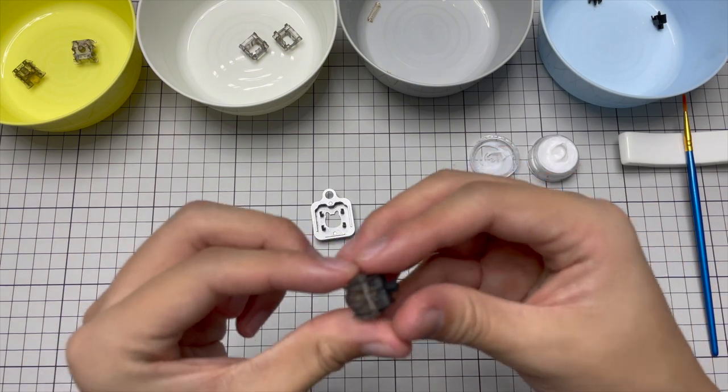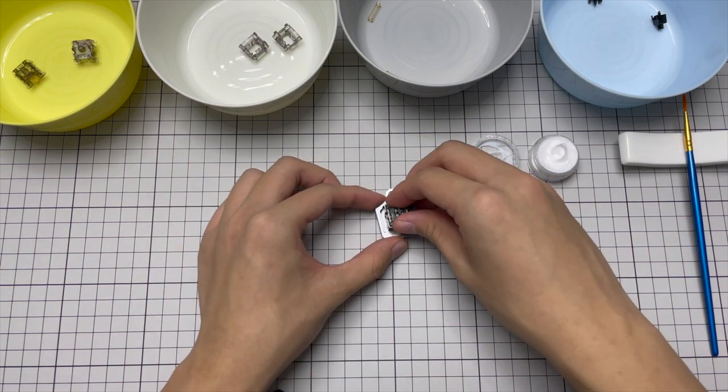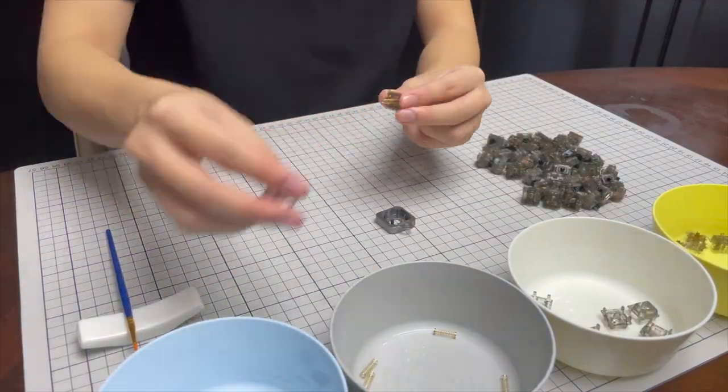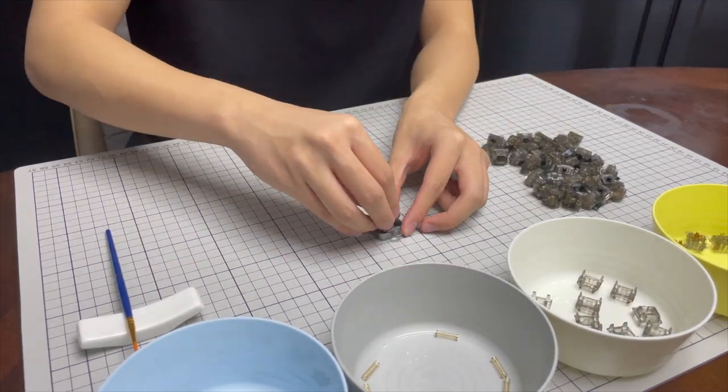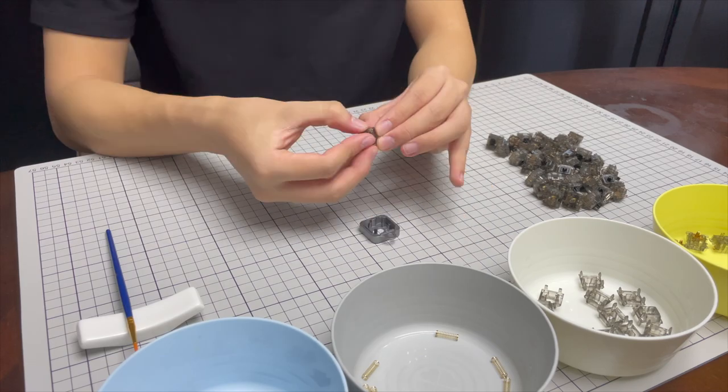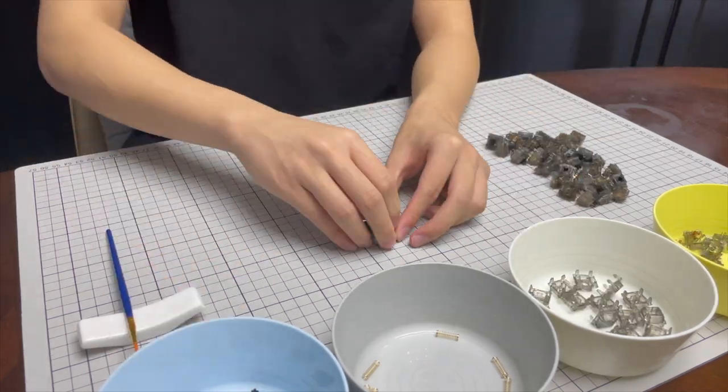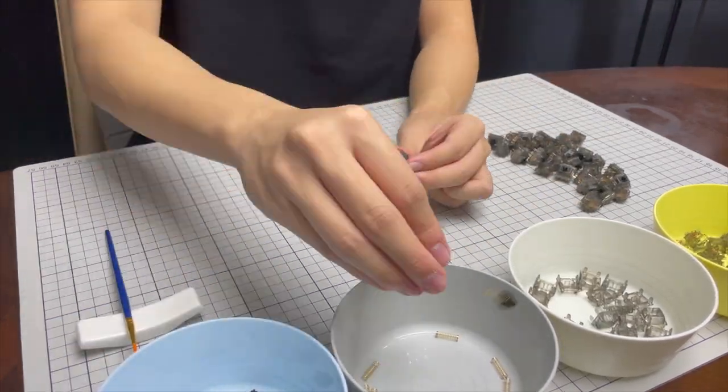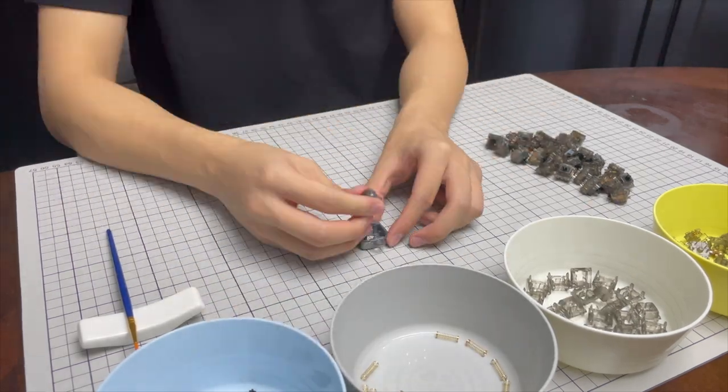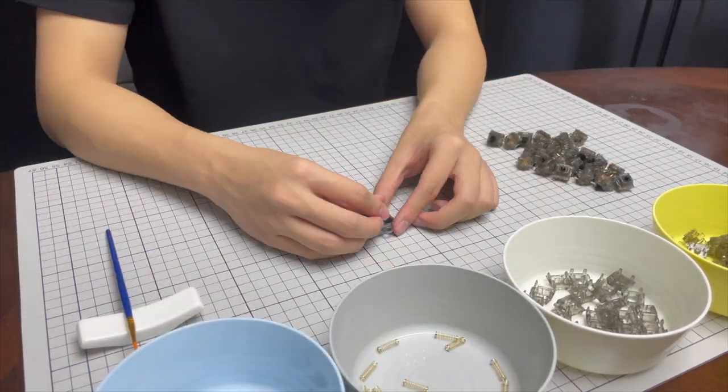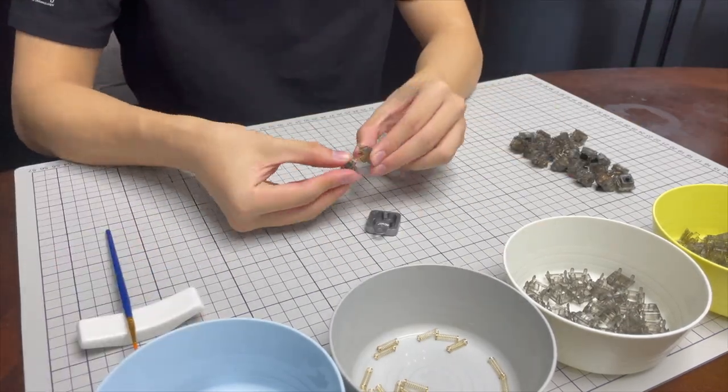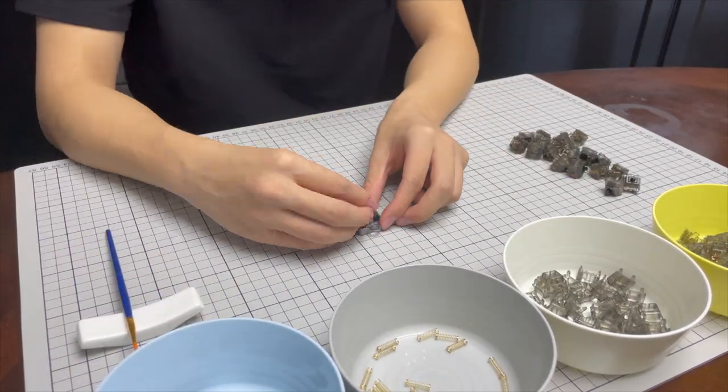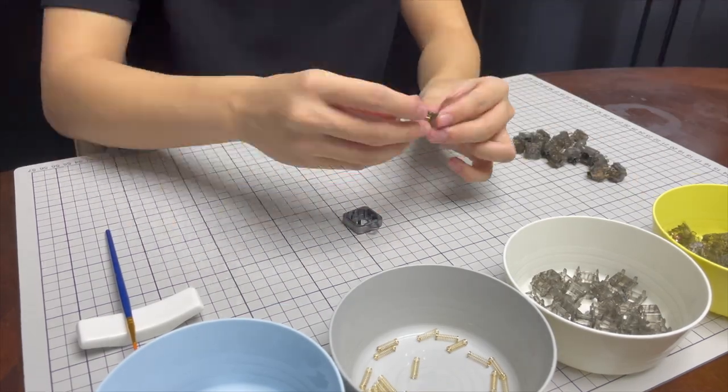Although these Durock L7 switches came pre-lubed in the factory, it still doesn't beat manual lubing, so I went ahead and lubed them myself. In order to do that, we must first dismantle the switches and put them into separate bowls. The switch opener I bought from KBD Fans helped tremendously. However, if you don't have a switch opener, you can still dismantle the switches, but it'll be a hassle and be even more time consuming. The switch opener is quite inexpensive, so I highly recommend them. I'll leave a link in the description to where you can get it.